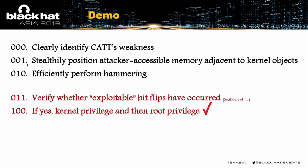The first three primary steps are now complete. We need to verify whether exploitable bit-flips have occurred. The idea is that if a virtual page is no longer pointing to a physical page, we can confirm a page table has been bit-flipped. And if we can find another page pointing to a page table page, it means we have gained kernel privilege — because an exploitable page table means we can read or write all physical memory. After that, we can scan the kernel memory and change the user ID to zero to gain root privilege.